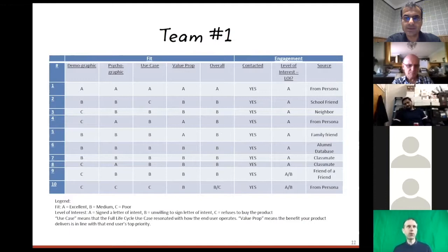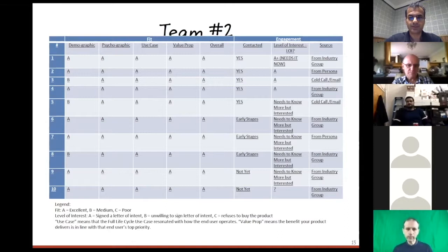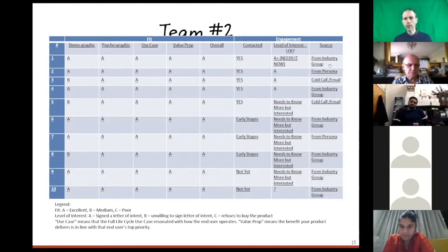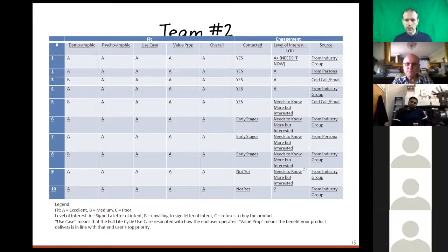Here's team number two. This is a very ideal one here because you've got lots of A's in terms of the matching and there's one or two B's. But in general, obviously it's great to have the fish, but it's also good to be able to see the level of interest. You can see one, two, three, four, four saying they need it right now, a very high level of interest. And then there's six that say they need to know more what they are interested. So that's positive.